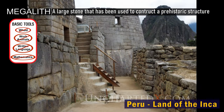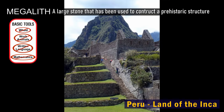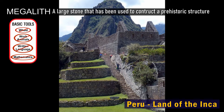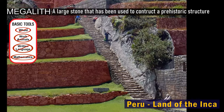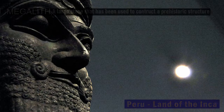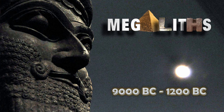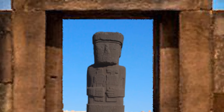This is Machu Picchu. One side has megalithic work; the other side is more recent. Here's a large part of Machu Picchu — can you find the megalithic work? We're going to highlight the recent work to show the contrast.